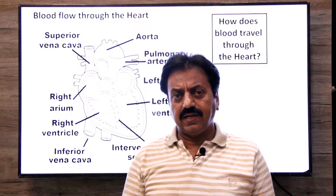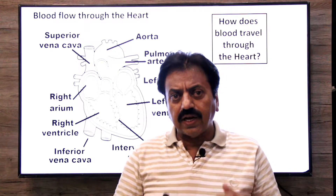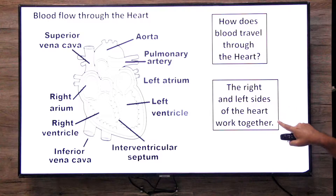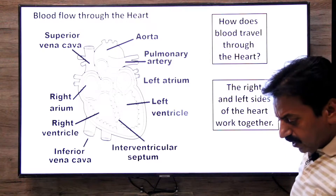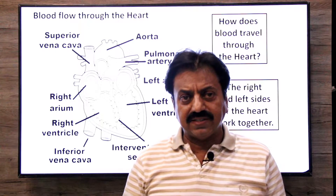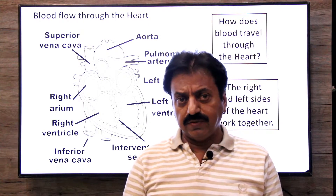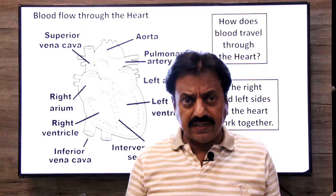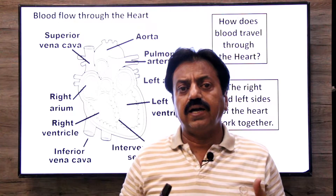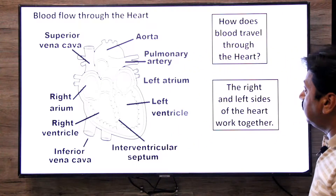Our heart has two sides — the right and the left side — and they work together. When both sides of the chambers are contracted, it is called systole — contraction of the heart chambers. And when both sides of the chambers are relaxed, it is called diastole — relaxation of the heart chambers.